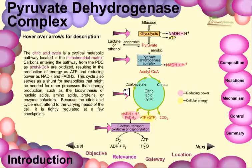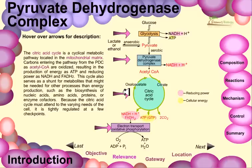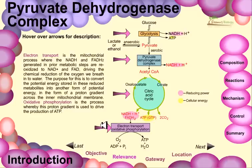The citric acid cycle is a cyclic metabolic pathway located in the mitochondrial matrix. Carbons entering the pathway from the PDC as acetyl-CoA are oxidized, resulting in the production of energy as ATP and reducing power as NADH and FADH2. The cycle also serves as a source of metabolites needed for other processes beyond energy production, such as the biosynthesis of nucleic acids, amino acids, proteins, or enzyme cofactors. Because the citric acid cycle must attend to the diverse needs of the cell, it is tightly regulated at a few checkpoints.